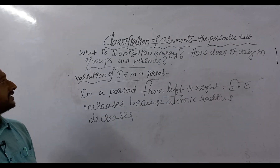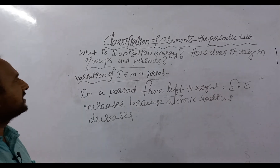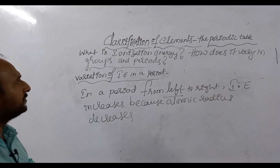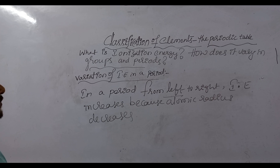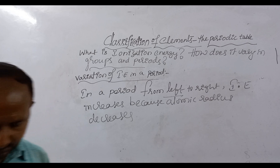This is what ionization energy is and how it varies in groups and periods. In the next video, we will cover what is electron affinity and how it varies in groups and periods, as well as what is electronegativity and how it varies in groups and periods. These are the most important topics coming in our next videos. That is all for today's class, students.